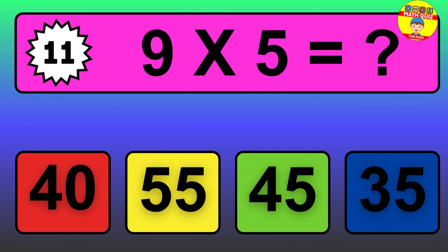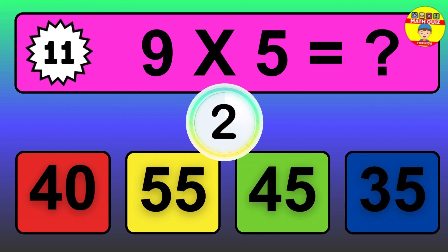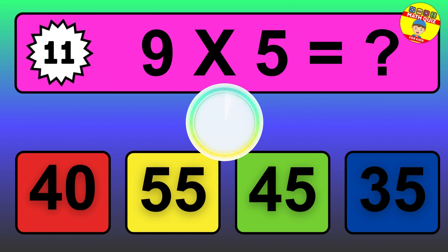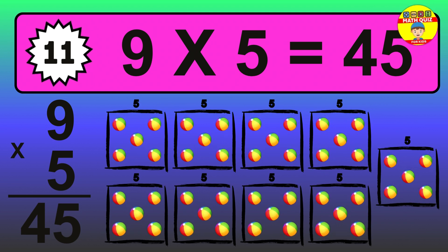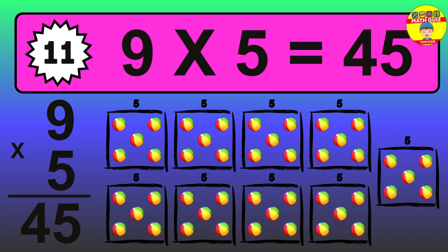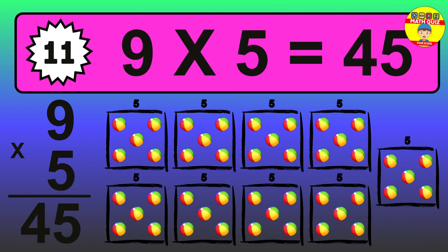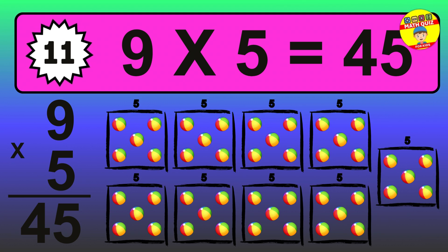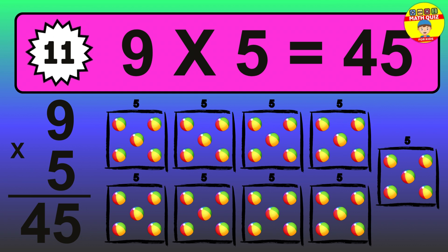Question 11. 9 times 5 equals what? The answer is 45. To calculate, we have 9 groups with 5 balls each one. So, how many balls do we have? 45 balls.